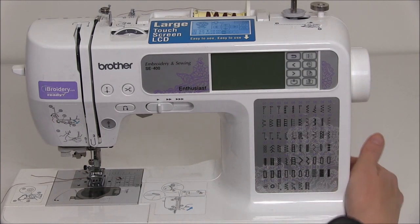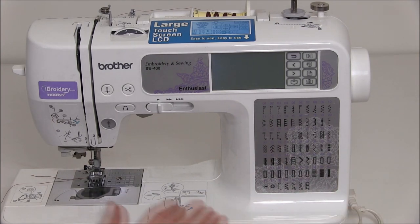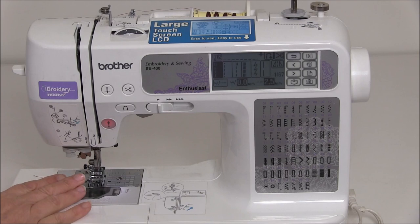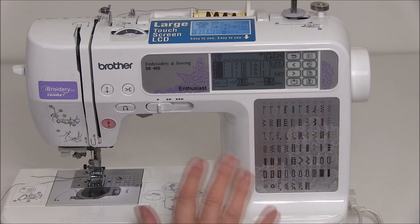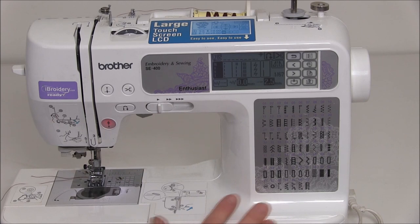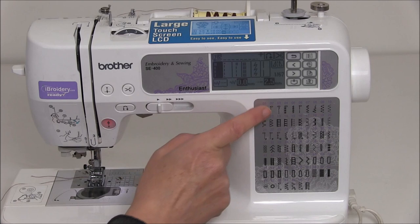When you're ready, turn your machine on and make sure you have the plain presser foot set in your machine. This machine is computerized, it's electronic. You may have a machine with dials; either way, it's going to be exactly the same process.